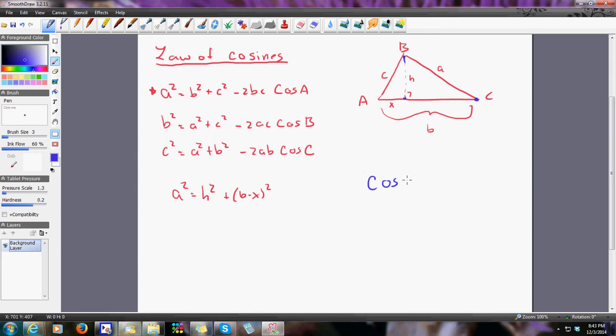Cosine of A would be the adjacent over the hypotenuse, x over c, so I'm just going to cross multiply. That really means that x = c·cos(A).